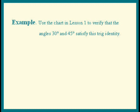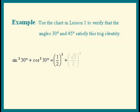Let's do the 30 degree one first. We have sine squared of 30 degrees plus cosine squared of 30 degrees equals sine of 30 degrees is 1 half. Cosine of 30 degrees is square root of 3 over 2. Square those out, we have 1 fourth plus 3 fourths. And that adds up to 1.